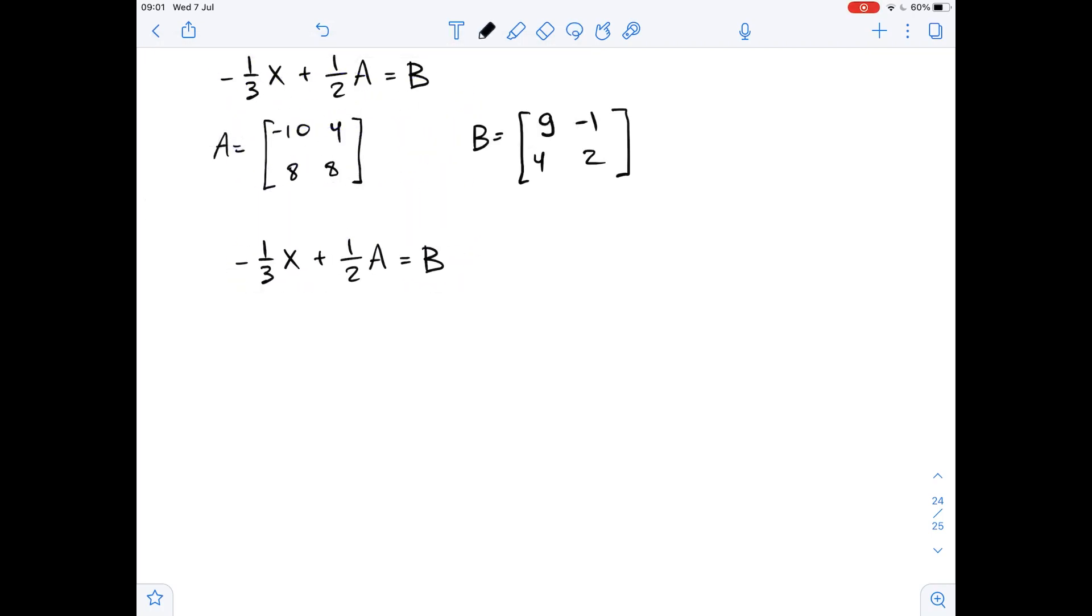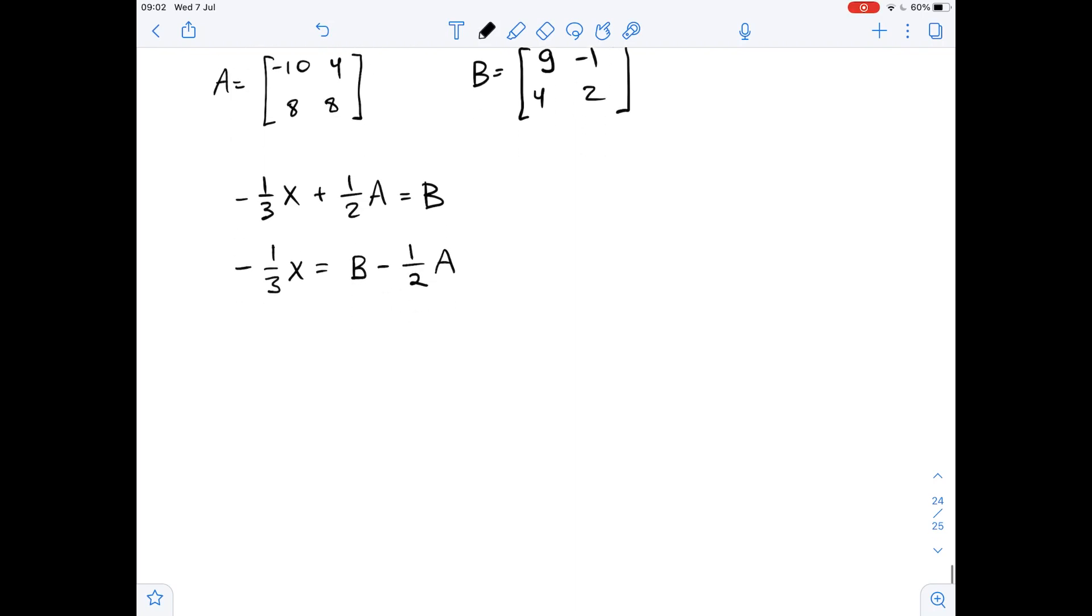Here we can subtract 1 over 2A from both sides and we will get that negative 1 over 3X equals B minus 1 over 2A. Now we can multiply both sides by negative 3 and we will get that X equals negative 3B plus 3 over 2A.